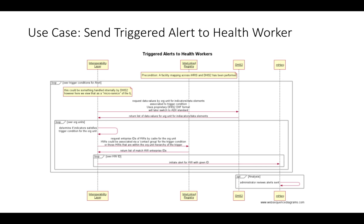If thresholds are exceeded, we request the IDs of the health workers in the defined cohort for receiving the alert. This comes from the interlinked registry, which is fed from IRIS. Once we have the IDs, we can send the alert message to those health workers via mHero in the MACM standard. At a later point, an administrator can go back and review the alerts sent to monitor that everything is going well.